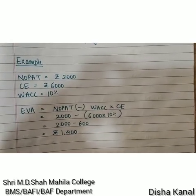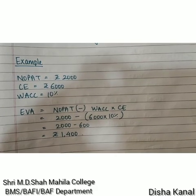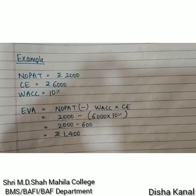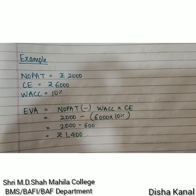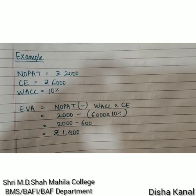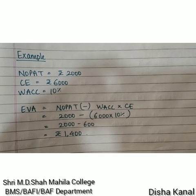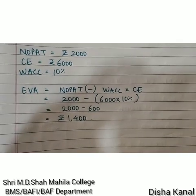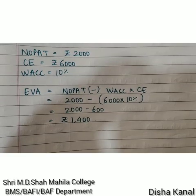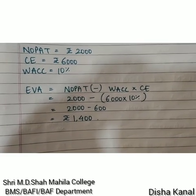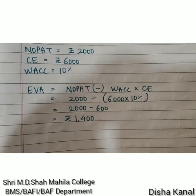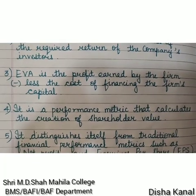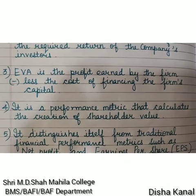Let us take a small numerical example to understand EVA better. Suppose NOPAT is Rs 2,000, the capital employed is Rs 6,000, and the weighted average cost of capital is 10%. Substituting the values in the formula, you get EVA as Rs 1,400. This matches the definition: EVA is the profit earned by the firm by deducting the cost of financing the firm's capital.